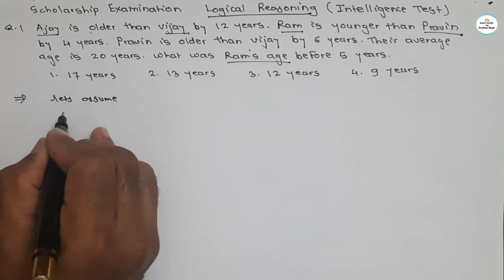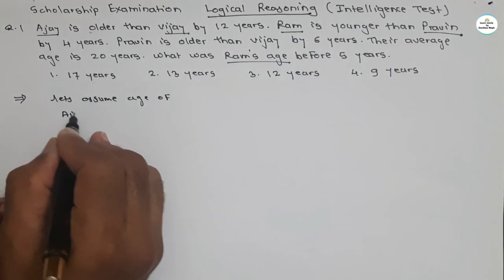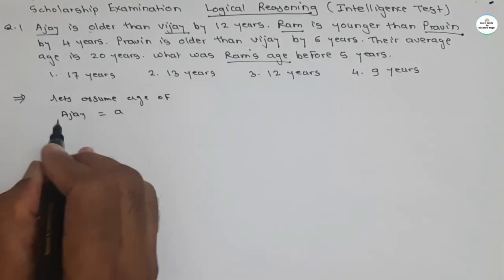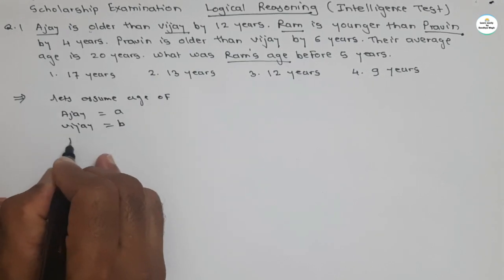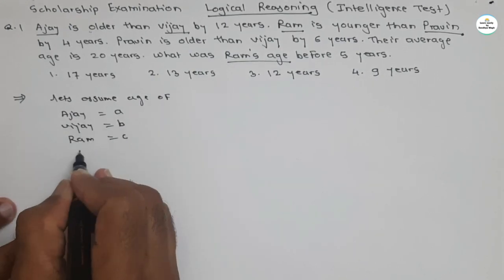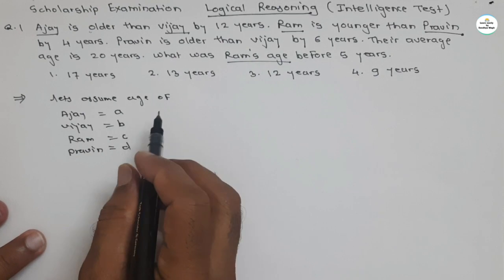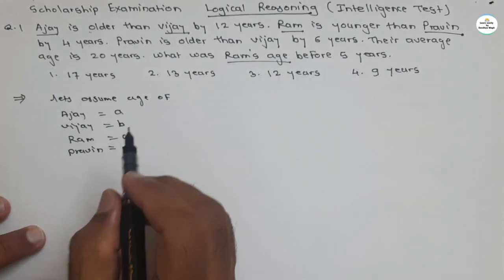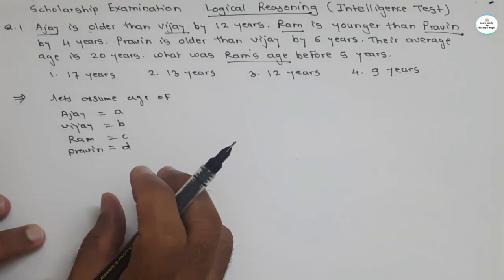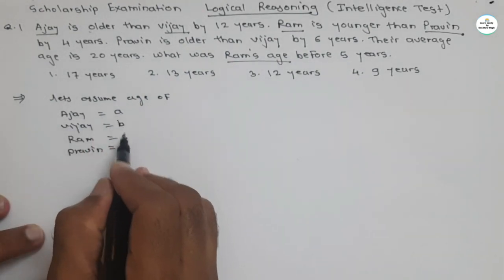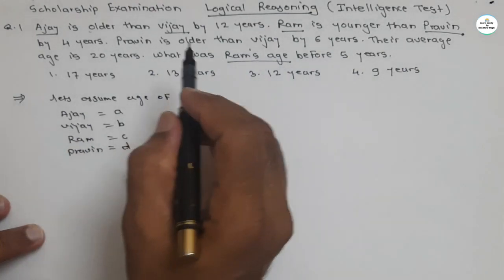Let's assume the age of Ajay as a, Vijay as b, Ram as c, and Praveen as d. We have to do the calculation very fast, but I'm showing slowly so you understand the procedure. Try to understand the basic concept and the logic behind it. We have considered a, b, c, d as the ages of Ajay, Vijay, Ram, and Praveen respectively.